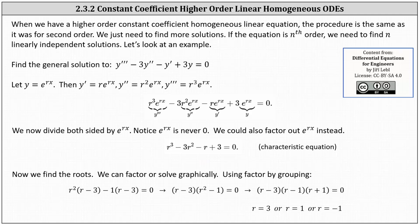To solve by factoring, we use the technique of grouping where we cut the polynomial in half on the left, and then we factor out the greatest common factor from the left and right, and we should have a common binomial factor. Factoring r squared from r cubed minus three r squared, we have r squared times the quantity r minus three. Next, we factor out negative one from negative r plus three, which gives us negative one times the quantity r minus three equals zero. Notice we do have a common binomial factor of r minus three. We now factor r minus three from the left, which gives us the quantity r minus three times the quantity r squared minus one equals zero.